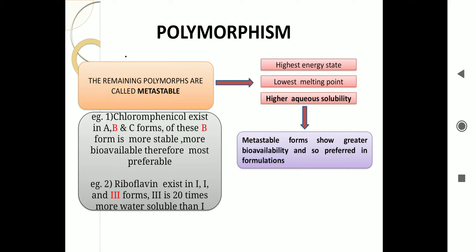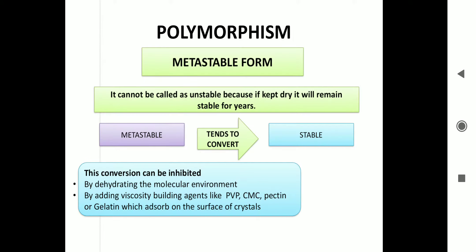You can see two examples in the left box. First, Chloramphenicol exists in three forms A, B and C, and of these, B form is more stable, more bioavailable, therefore it is more preferable. Another example is Riboflavin, which exists in three forms one, two and three. The third is 20 times more water soluble than the first, so the third one is used more. As I showed in the first slide, metastable polymorphs have the highest energy state. So we cannot say that they are unstable, because if kept dry, it will remain stable for years. If we keep it dry, it will remain stable for a longer period of time.